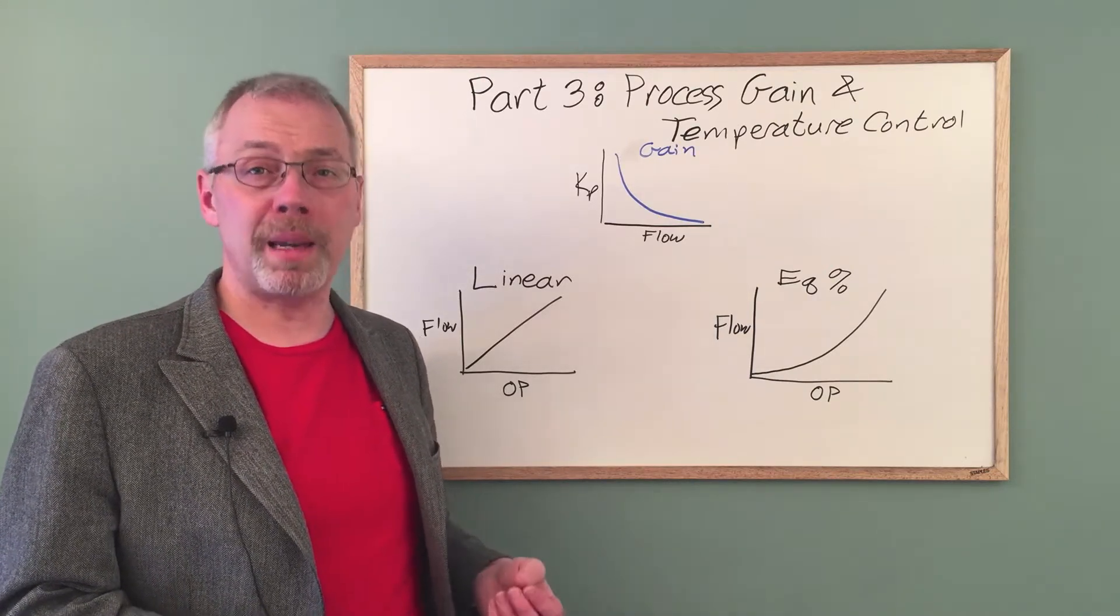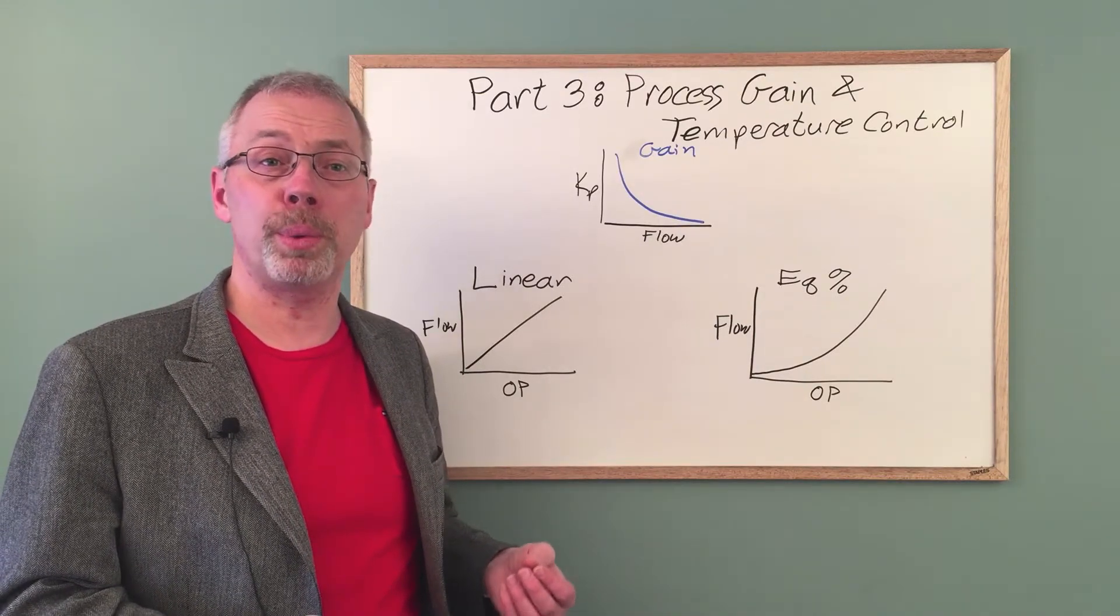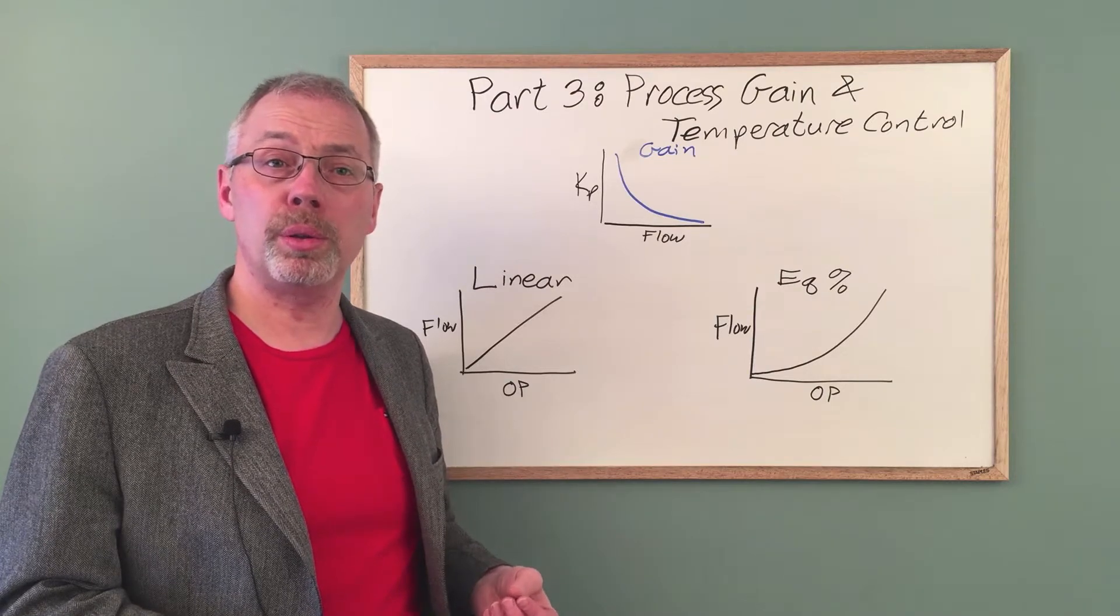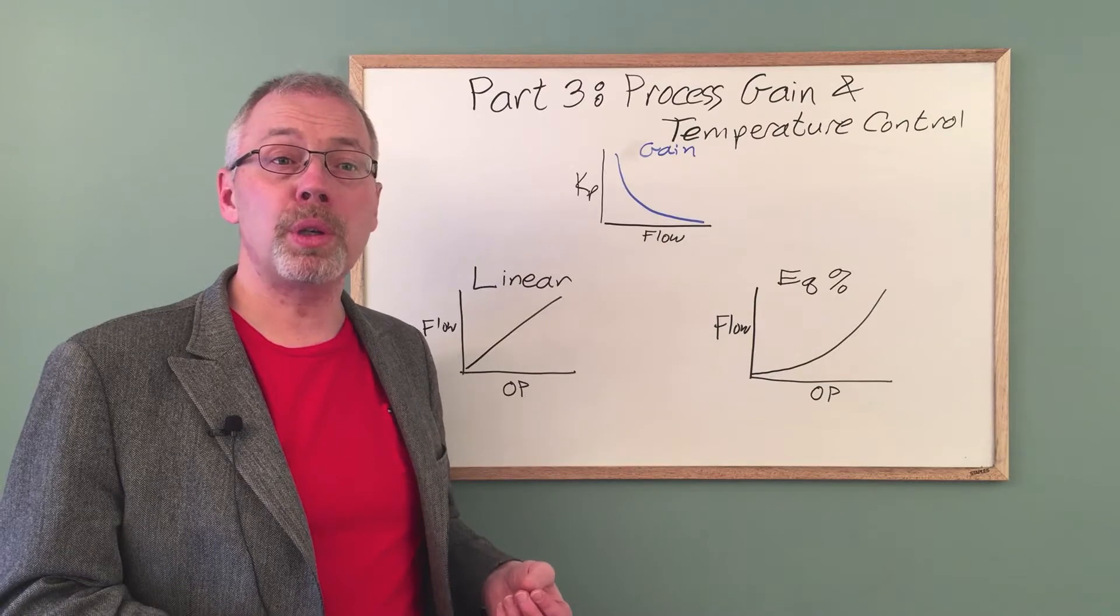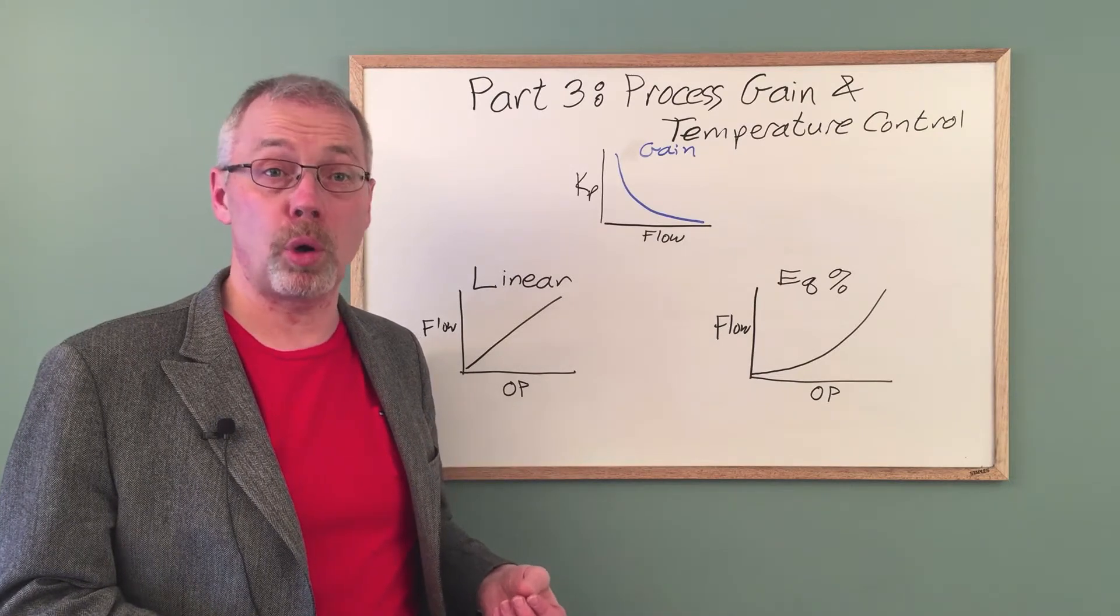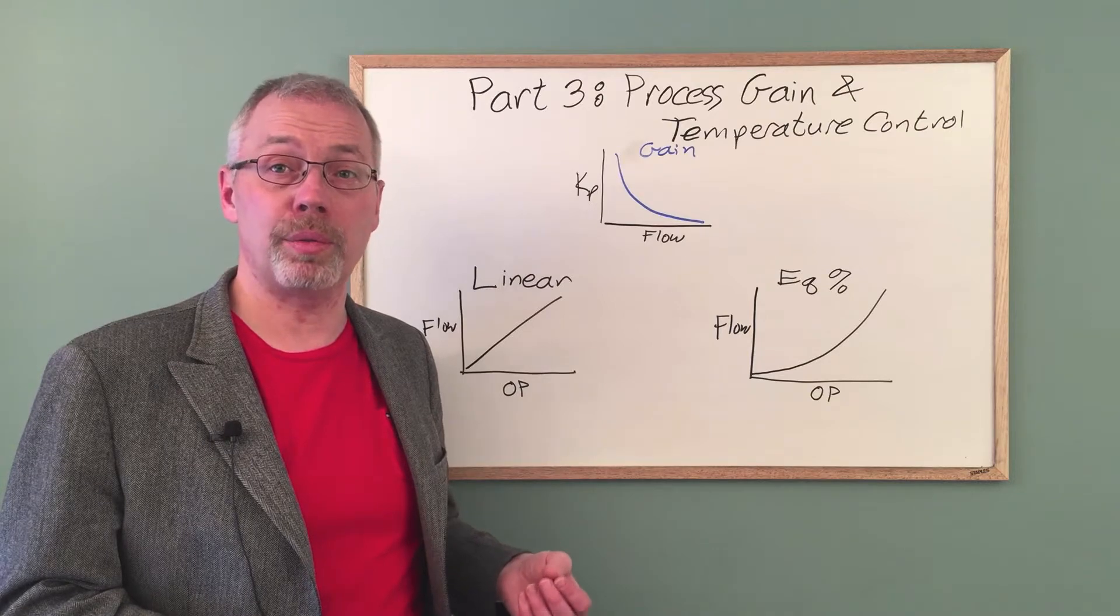What is the benefit? Let's compare temperature control with linear and equal percent valves where the controller is tuned to work well at normal rates. Then we will turn the flow down to one third of normal. This will cause the process gain to increase by a factor of 3.